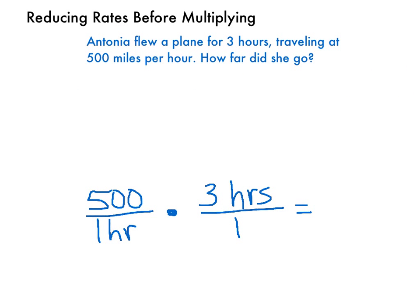In this example, we see that Antonia flew a plane for 3 hours, traveling at 500 miles per hour. How far did she go? Well, this is the kind of problem that you could do using mental math. 3 hours times 500 miles equals 1,500 miles. And you probably could figure that out in your head.